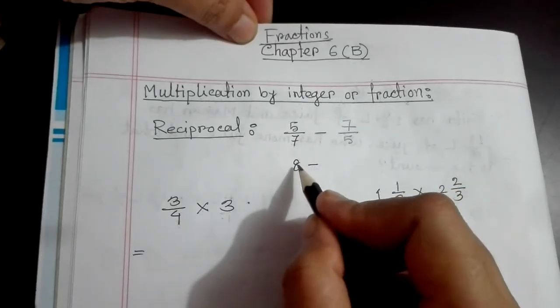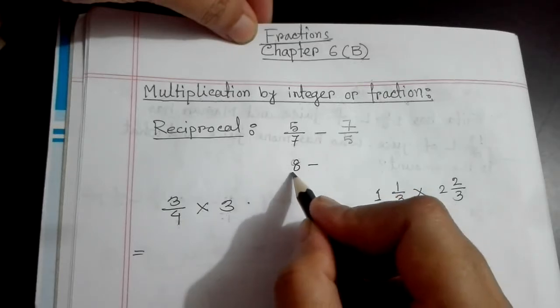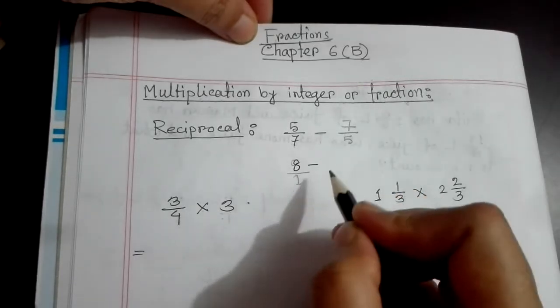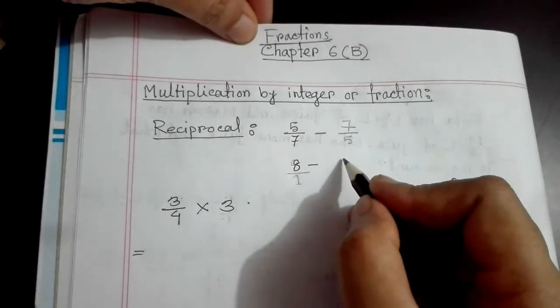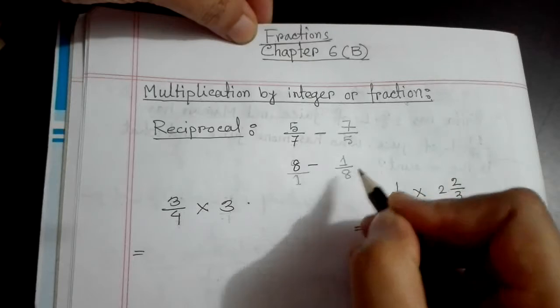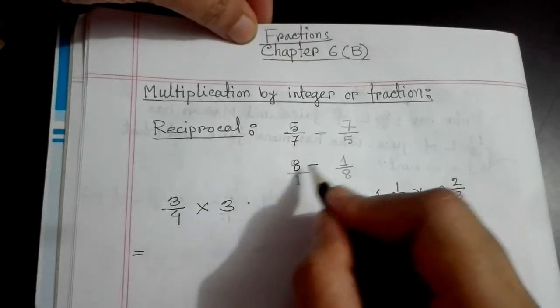Look here. This is 8. How do we inverse this? Any integer or whole number has 1 in the denominator. So 8 becomes 1 over 8 when we inverse it. This is the reciprocal of 8.